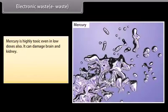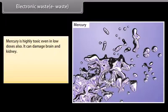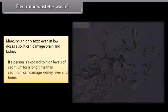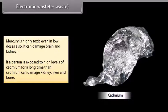Mercury is highly toxic even in low doses; it can damage the brain and kidney. If a person is exposed to high levels of cadmium for a long time, then cadmium can damage the kidney, liver, and bone.